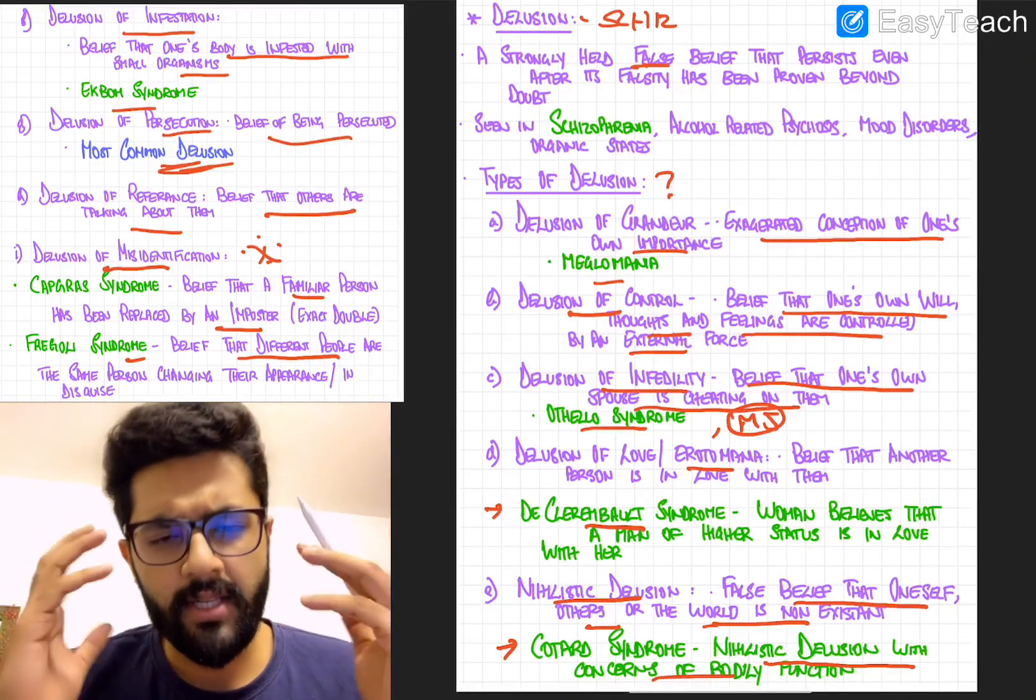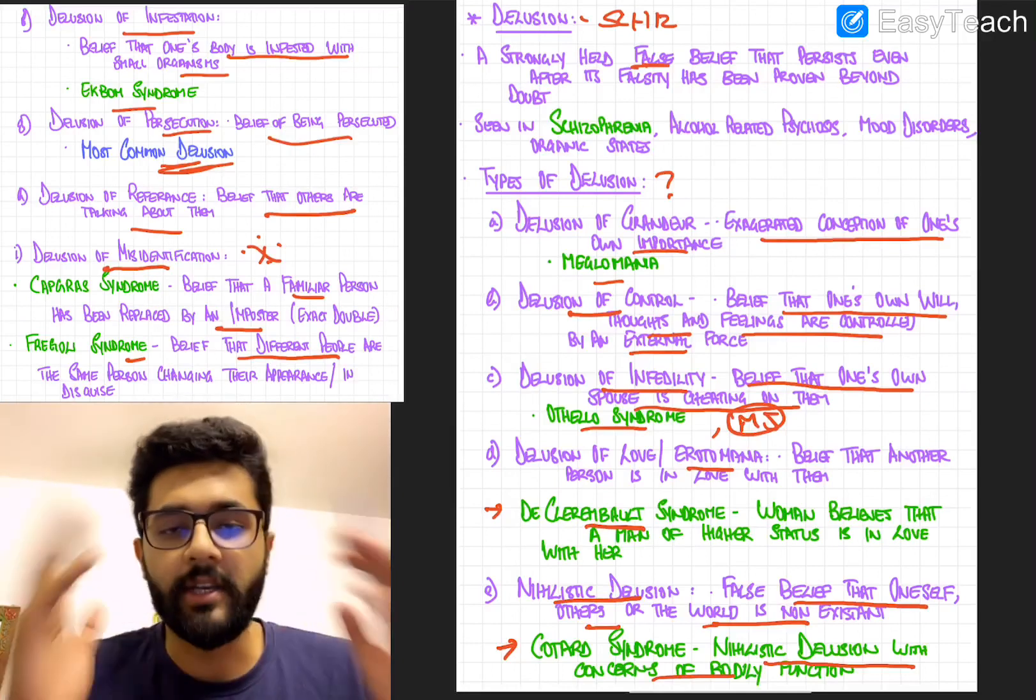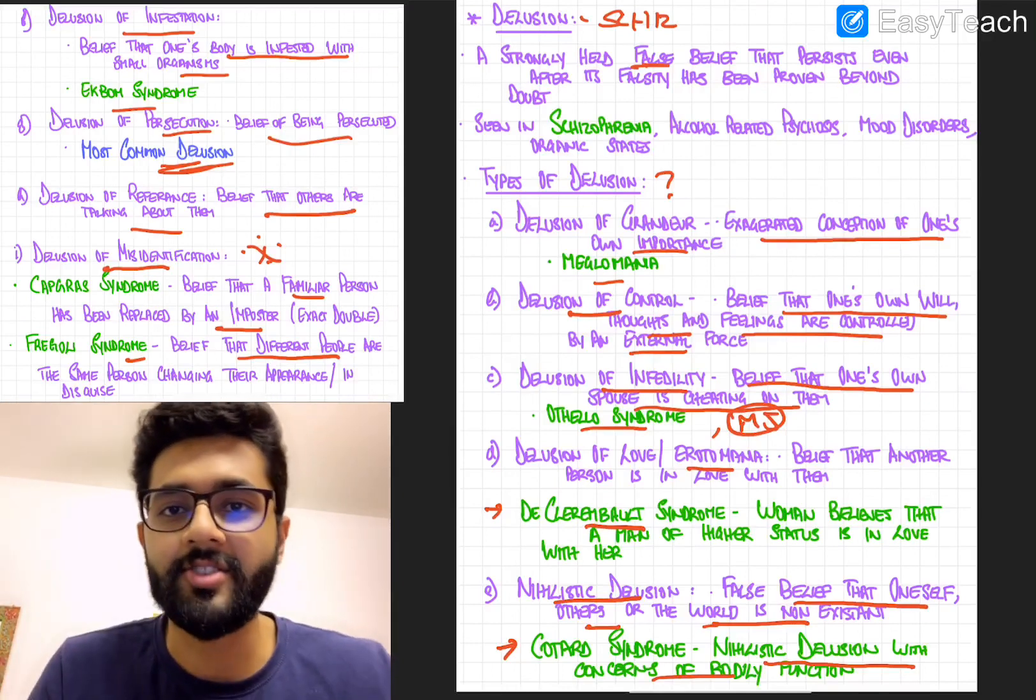So that was about Fregoli Capgras very high yield topic. So that was about delusions in five minutes. See you in the next short discussion. Thank you.